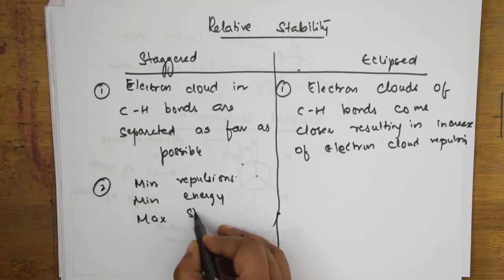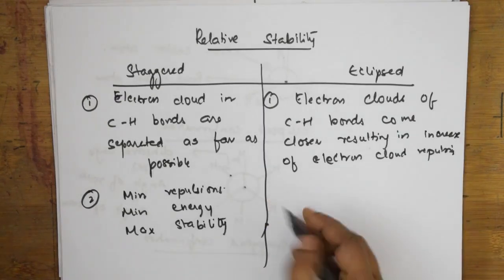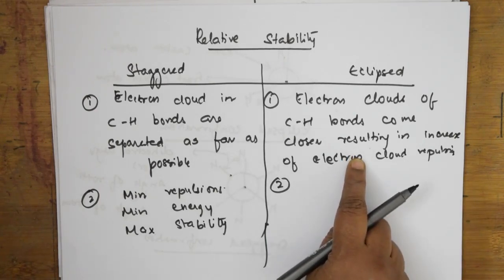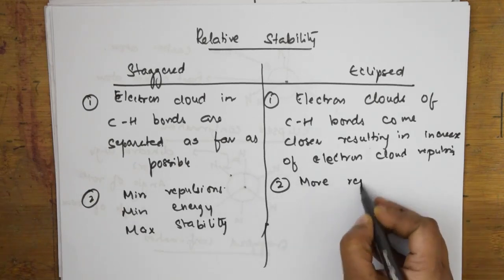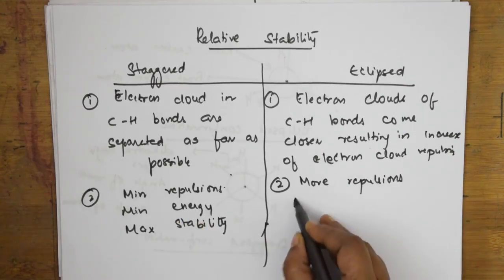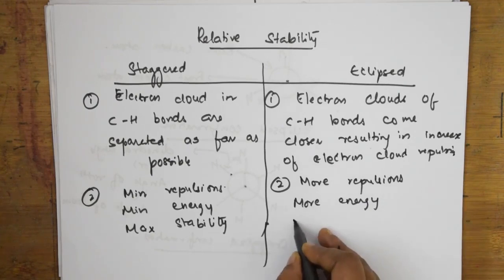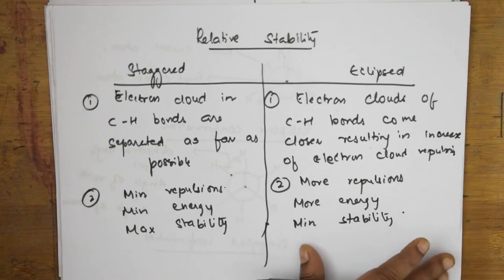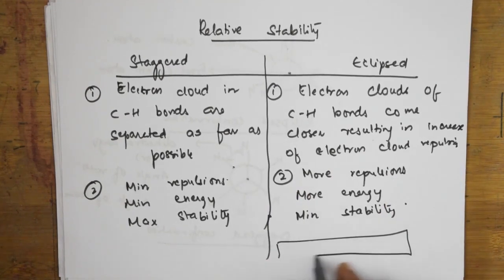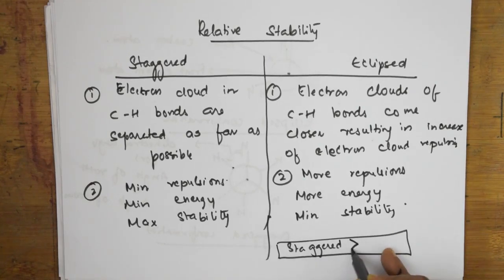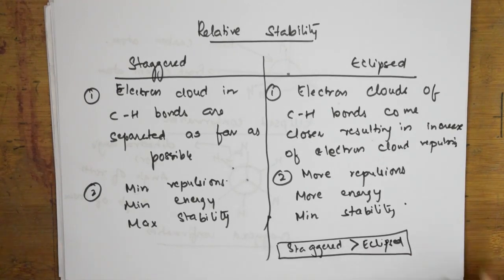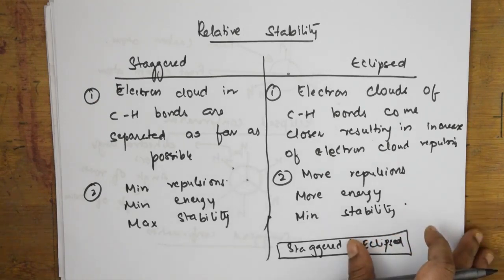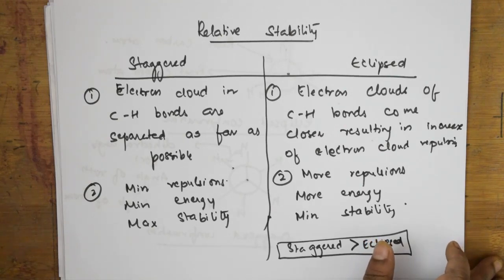The important concept: staggered confirmation is more stable than eclipsed confirmation. In terms of stability, staggered has greater stability compared to eclipsed form. This is what we studied in sawhorse and Newman projection for both eclipsed and staggered conformations. In the next video, we will discuss torsional strain.